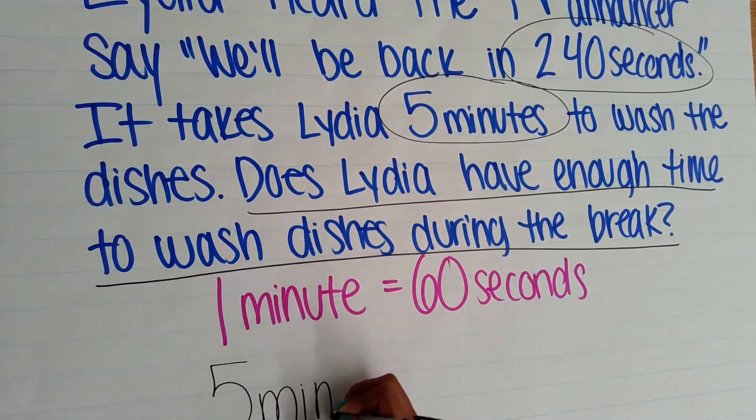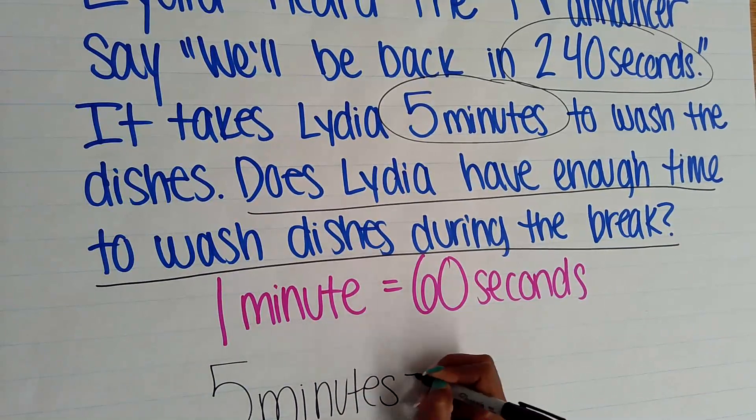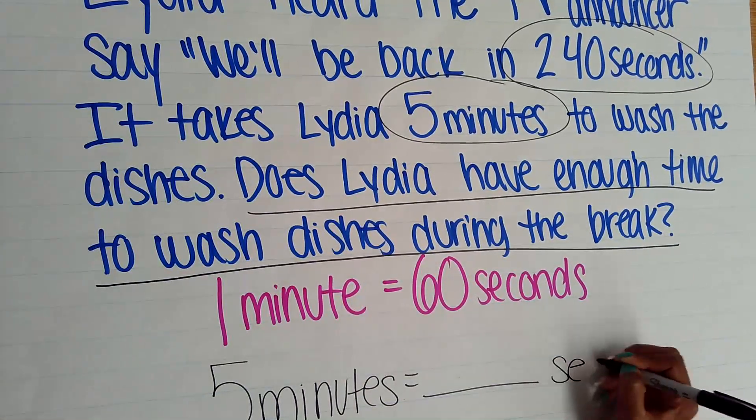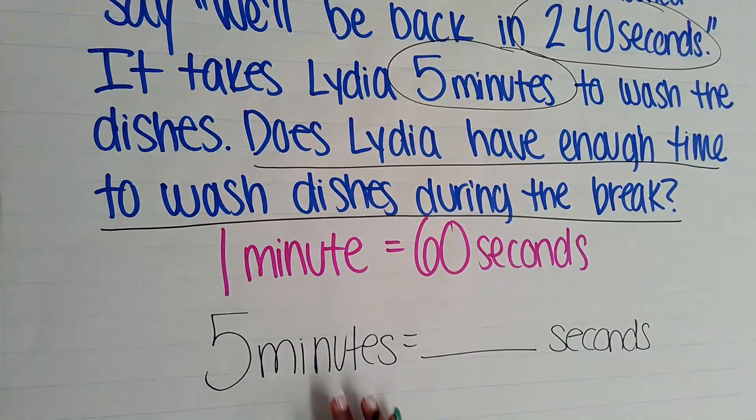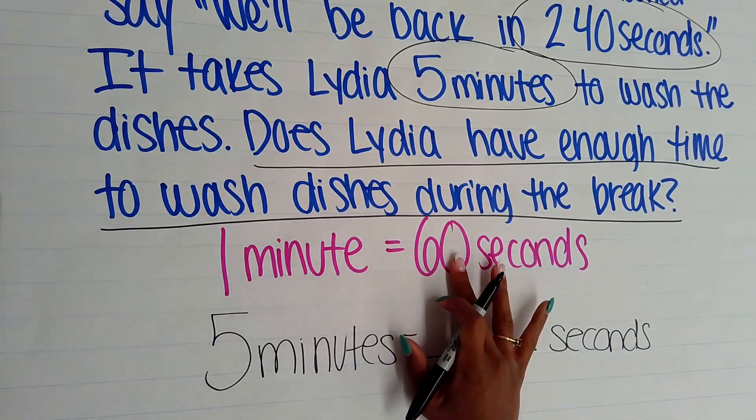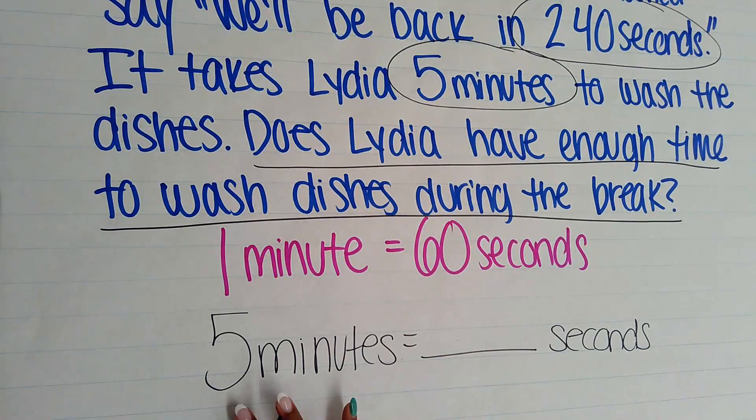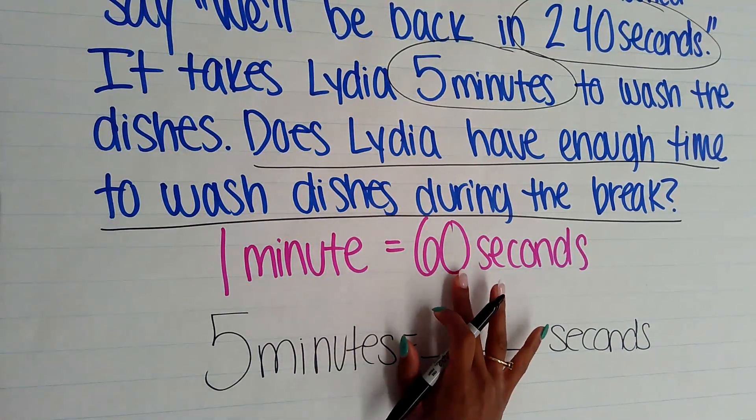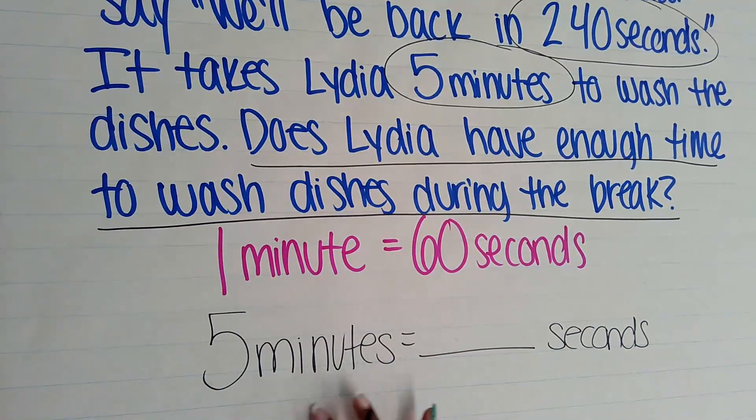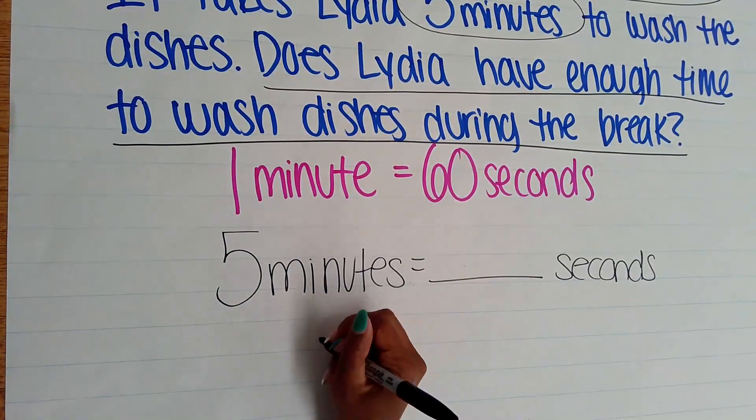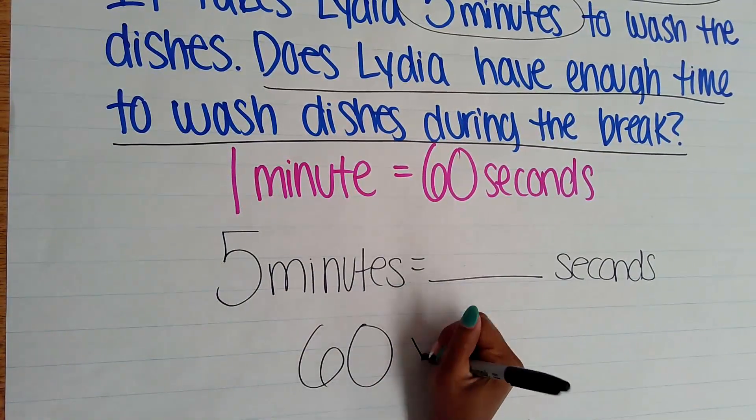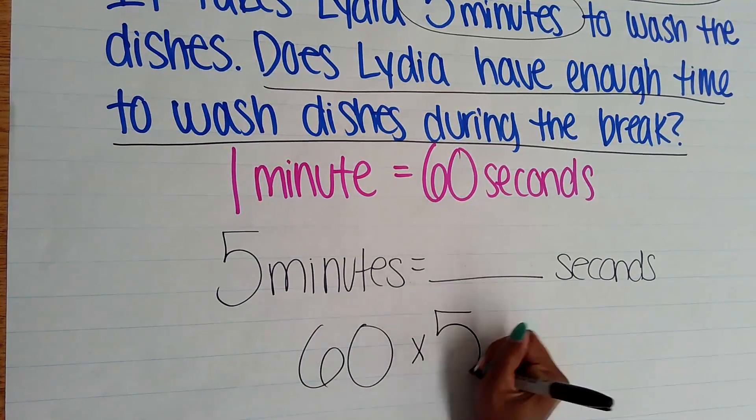Five minutes to wash the dishes, and we need to figure out how many seconds that is. So again, I have one group with 60 seconds. I now have 5 minutes—I have five times the amount of seconds in this 5 minutes. So I can take my 60 and I can multiply it by my 5 groups in my 5 minutes.